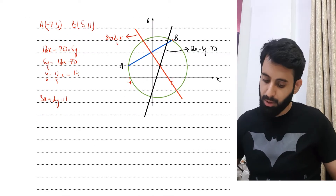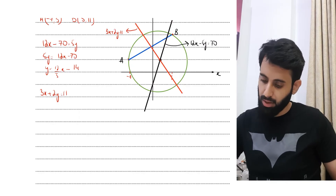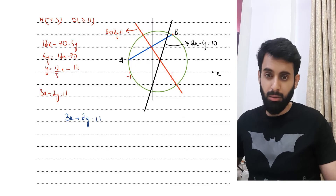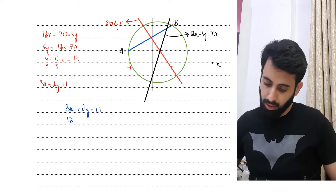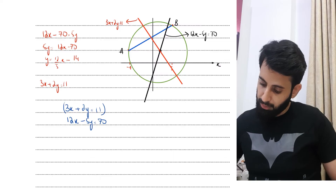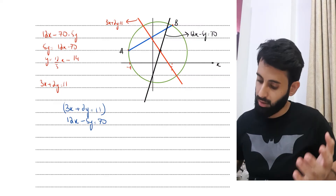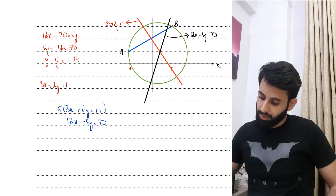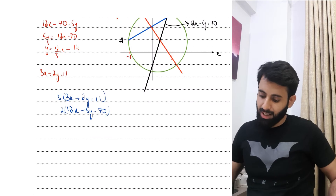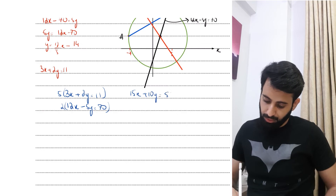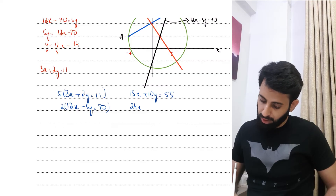I'll use elimination. Multiplying the first equation (3x + 2y = 11) by 5 gives 15x + 10y = 55. Multiplying the second equation (12x - 5y = 70) by 2 gives 24x - 10y = 140. Adding these eliminates y: 39x = 195.